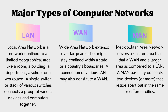We can find different types of computer networks structured to serve different purposes. The three main types are LAN, shortened for Local Area Network, WAN, shortened for Wide Area Network, and MAN, shortened for Metropolitan Area Network. There is also PAN, which stands for Personal Area Network. A LAN is a network limited to a specific geographical area like a room, a building, a department, school, or workplace.